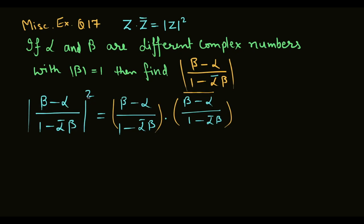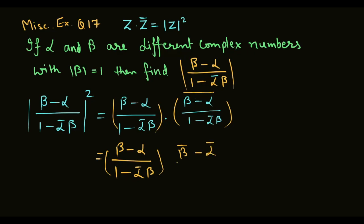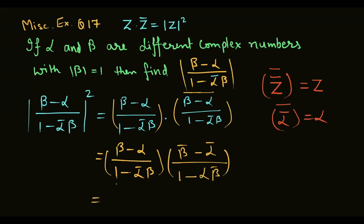Modulus of (beta minus alpha) upon (1 minus alpha conjugate into beta), whole square equal to (beta minus alpha) upon (1 minus alpha conjugate into beta) multiplied by its conjugate. इसको conjugate करते हैं: beta conjugate minus alpha conjugate, over 1 minus alpha into beta conjugate. z conjugate का dubara conjugate equal to z होता है, इसी से alpha conjugate का phir se conjugate alpha बन जाएगा।